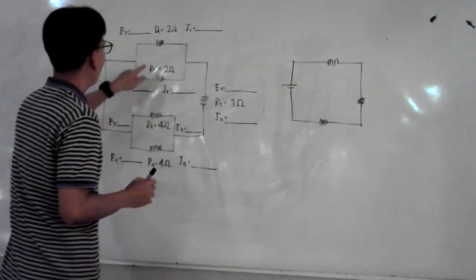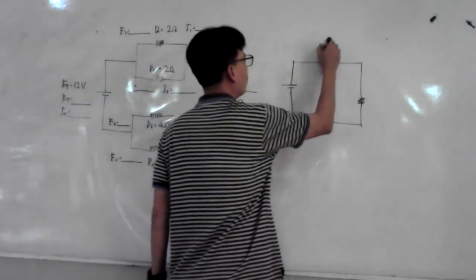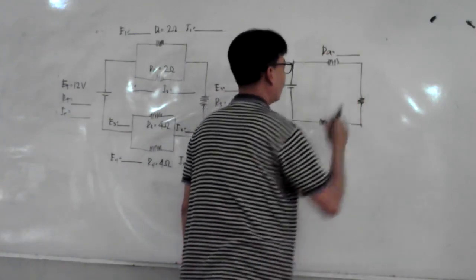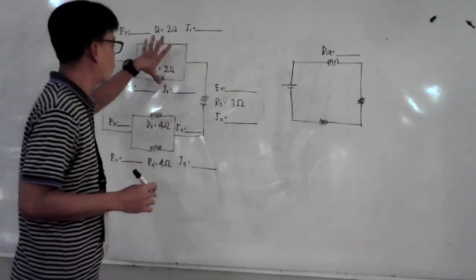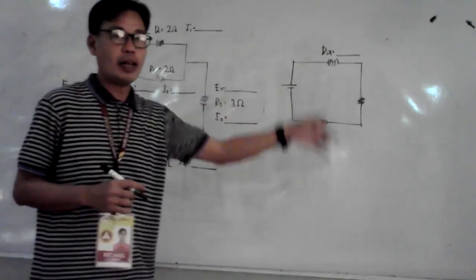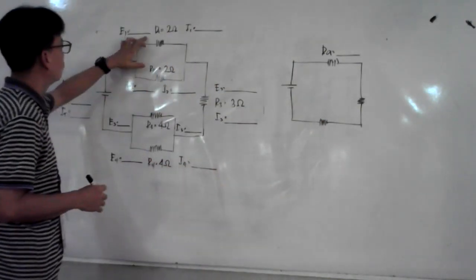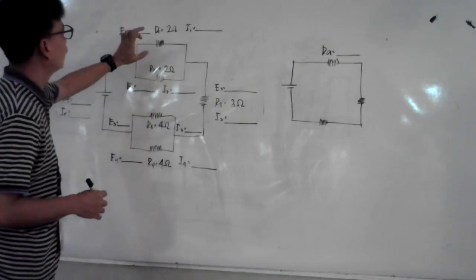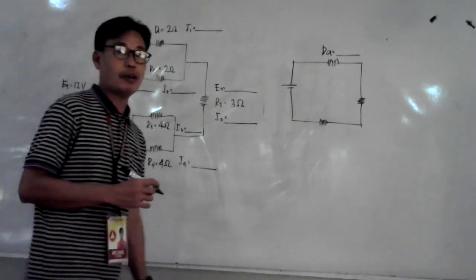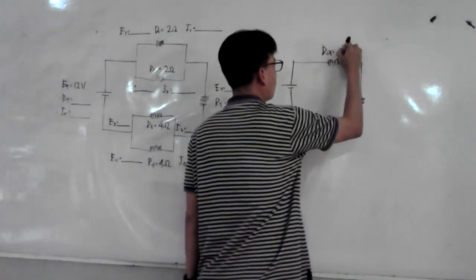We will combine R1 and R2. This will be Ra. The value for Ra is just two resistors in parallel: R1 times R2 divided by R1 plus R2. That equals 2 times 2 which is 4, divided by 2 plus 2 which is 4. So 4 divided by 4 equals 1 ohm.